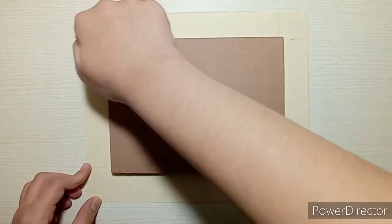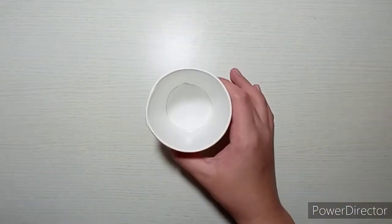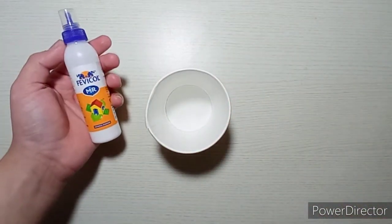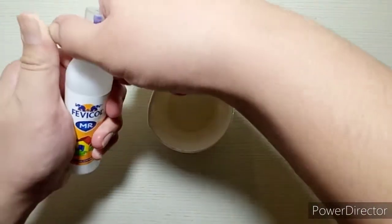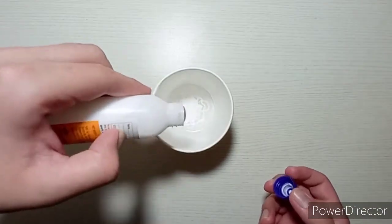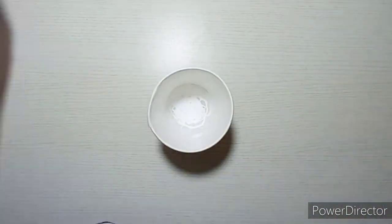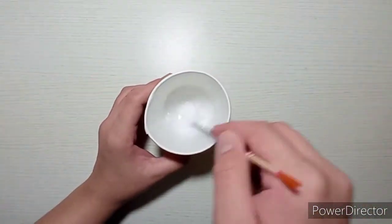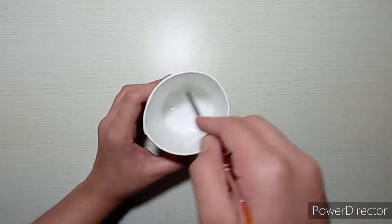Now the next step is to take some water in a cup and also take white glue and mix them together to make a slurry. The proportion that I'm using is 1 to 2, where the glue is in two portions and water is in one portion. You can even increase the proportion of water.